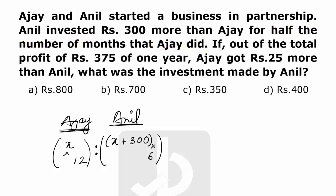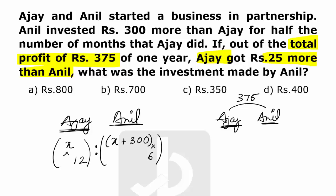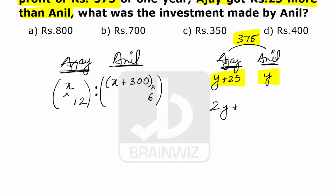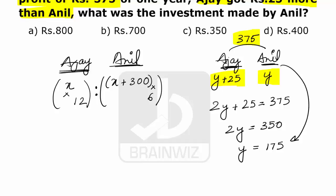In a total profit of 375 rupees, Ajay got 25 rupees more than Anil. Let Anil's share be Y, so Ajay's share is Y plus 25. Adding both: 2Y plus 25 equals 375, so 2Y equals 350, and Y equals 175. Therefore, Anil's share is 175 rupees and Ajay's share is 200 rupees.